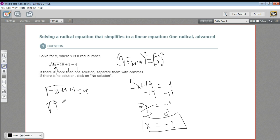so that's the square root of 9 plus 1 equals 4. And yeah, the square root of 9 is 3, and 3 plus 1 does equal 4. So if this equation comes out to be true, you know that this answer is good. So our answer here is x equals negative 2.